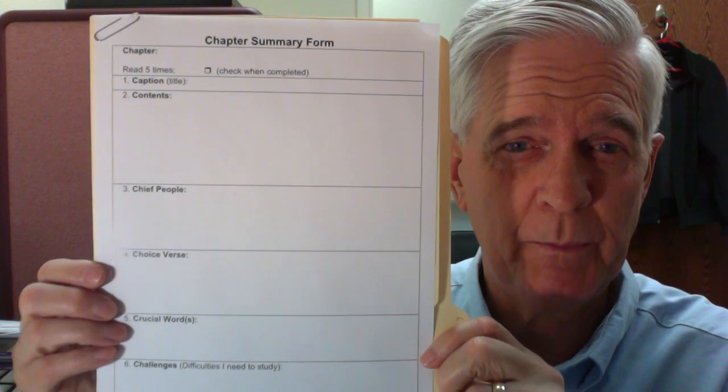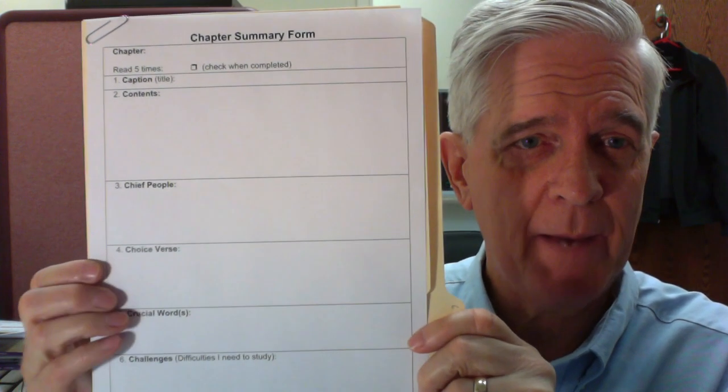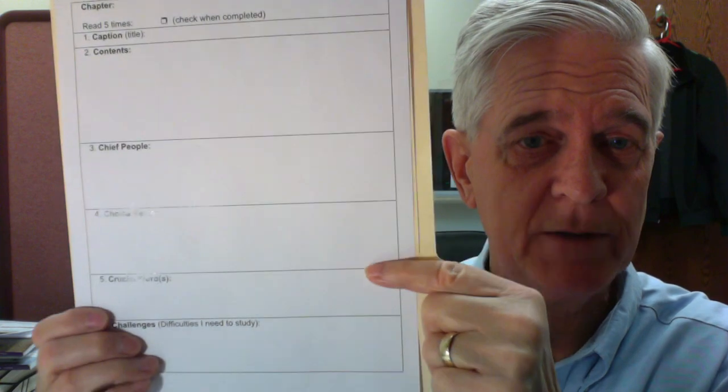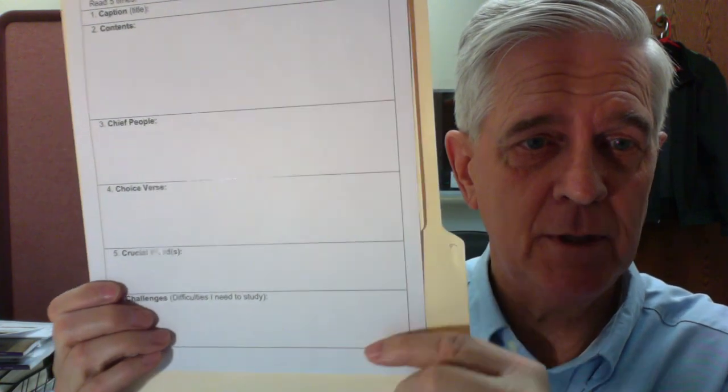Okay, now your chapter summary form should look something like this. Just use a full 8.5 by 11 sheet of paper on both sides. First of all, you have your chapter, your caption, and then of course you have your contents and the chief people, the choice verse, the crucial words, and then of course your challenges down at the bottom of the first page.